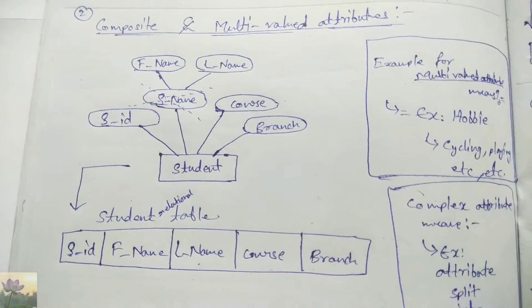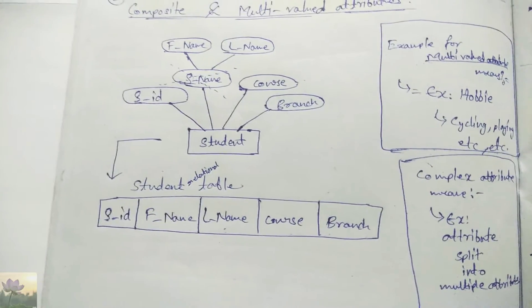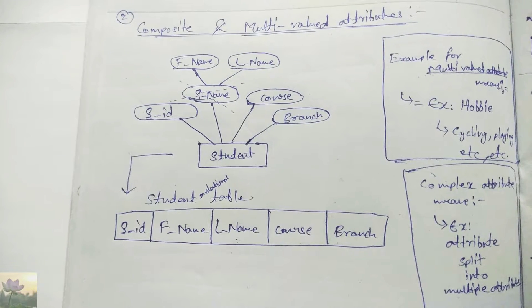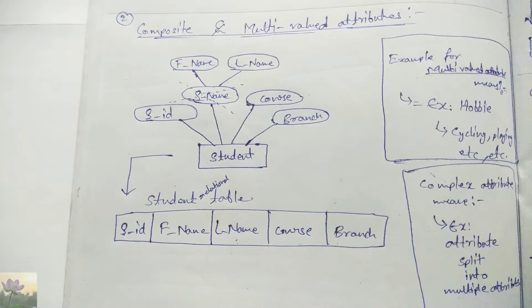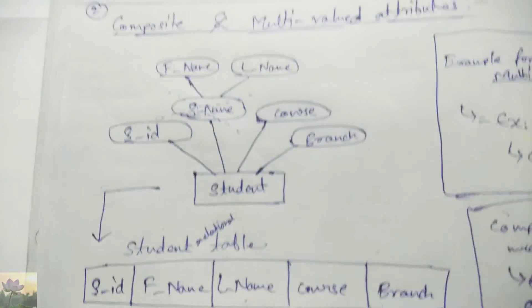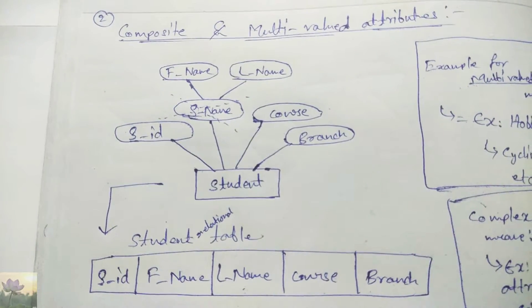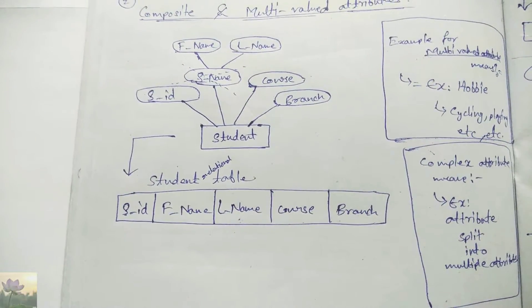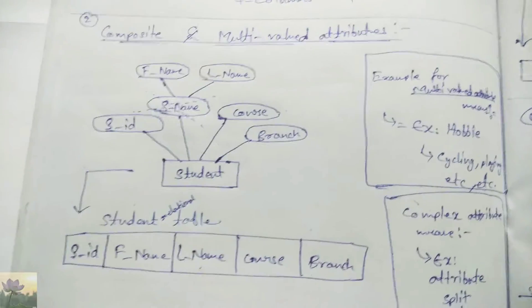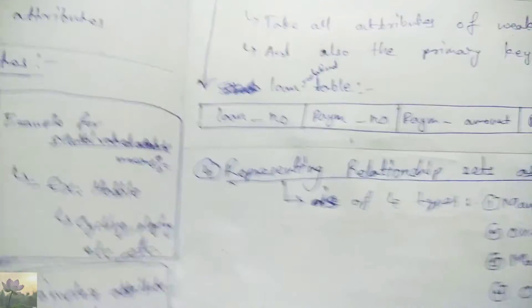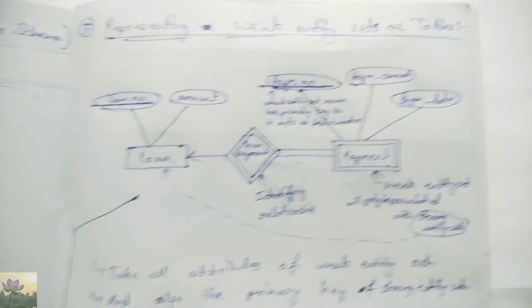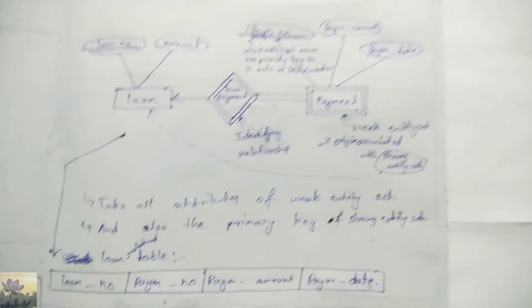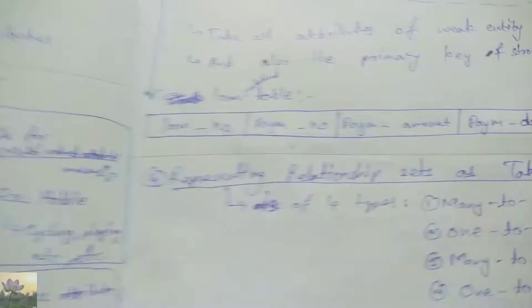Coming to the second type — composite and multi-valued attributes. The student entity set consists of the main attributes student ID, student name, course, and branch, and also the composite attributes s_name, which is made up of f_name (first name) and l_name (last name). These composite attributes, which are attributes built from other attributes, are simply removed or not considered, and all remaining attributes are written into the student relationship table.